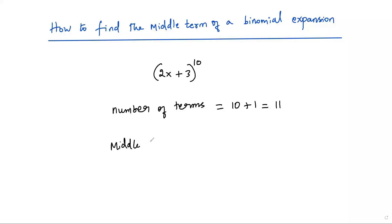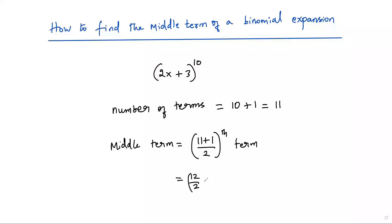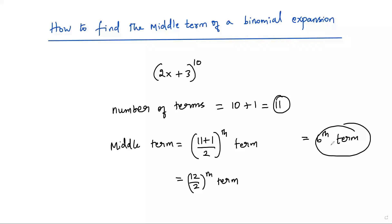Now to get the middle term, you have to add one to the number of terms and divide by two: (11 + 1) / 2. That is 12 divided by 2, which is 6. So the 6th term is the middle term among the 11 terms in the expansion.